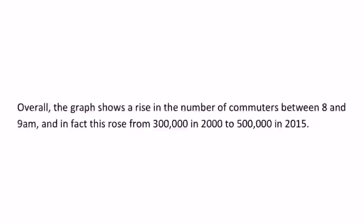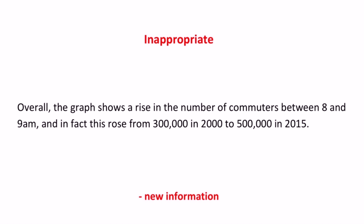Let's have a look at some examples so we can see what we've been talking about in action. I want you to read this example conclusion and think about the key points we just looked at. Do you think it's an appropriate conclusion? This conclusion is actually inappropriate because it introduces and includes new information — 'in fact this rose from 300,000 in 2000 to 500,000 in 2015.' This is new information and it shouldn't be in the conclusion. It should be in the main body.